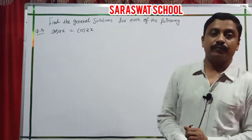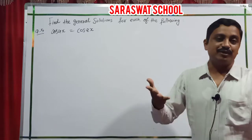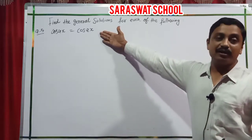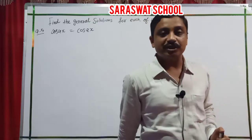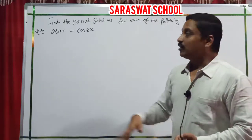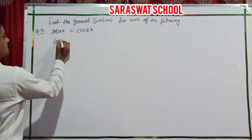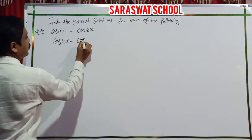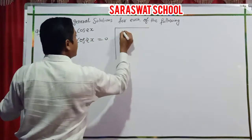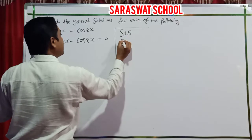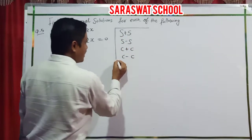Question 5: find the general solutions only. cos 4x minus cos 2x equals 0. You must know this property: S plus S, S minus S, C plus C, and C minus C, giving 2SC, 2CS, 2CC, and minus 2SS respectively.